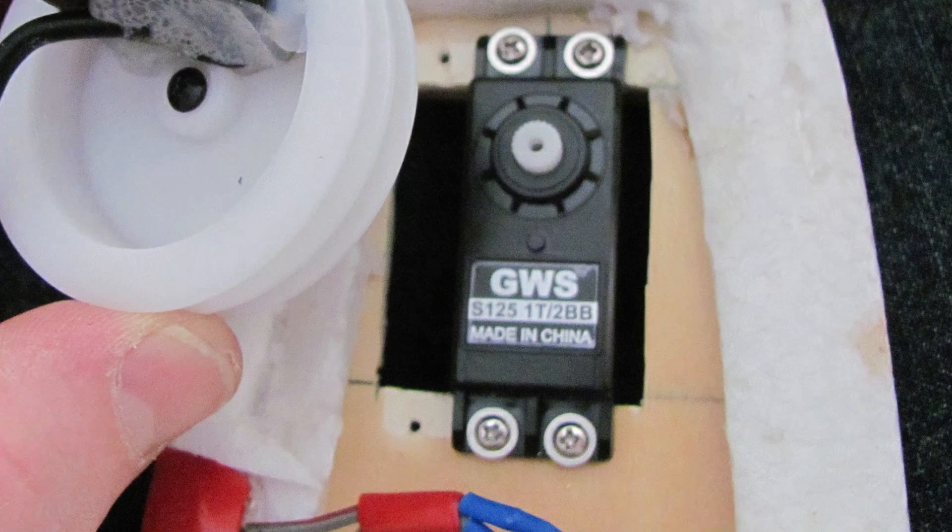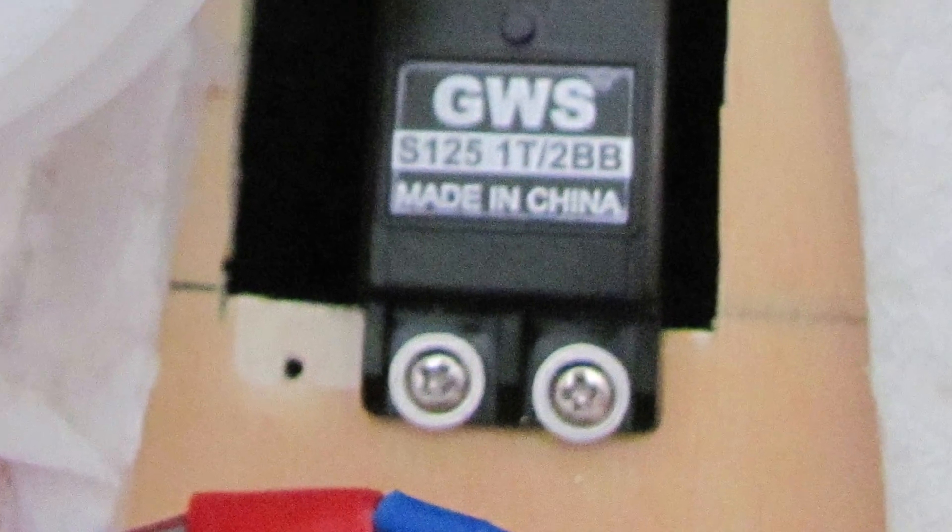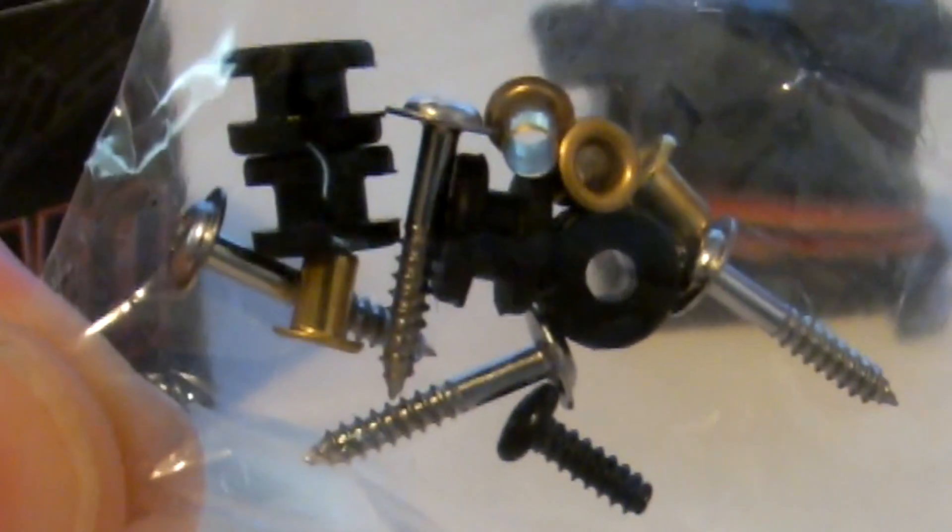Note that I did not use any of the included rubber grommets or brass sleeves here. You don't want your servo flexing in any direction, so don't use the vibration dampening grommets. You don't need them.